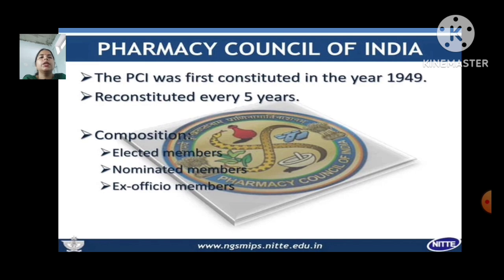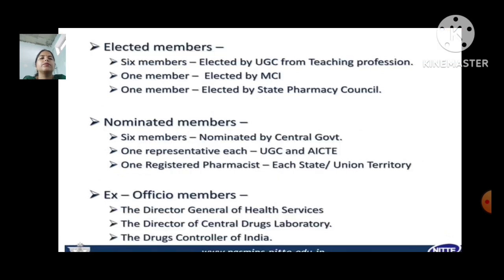Pharmacy Council of India: the PCI was first constituted in the year 1949 and is reconstituted every five years. Its composition includes elected members, nominated members, and ex-officio members.